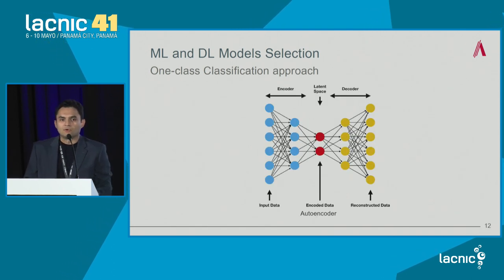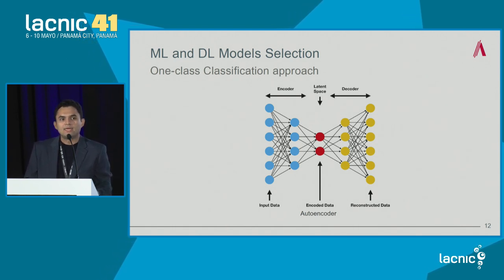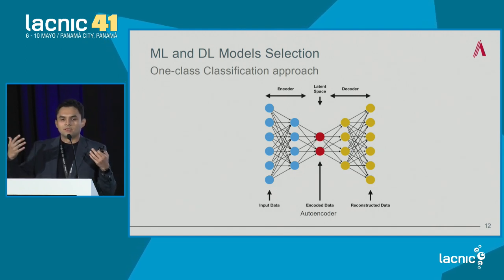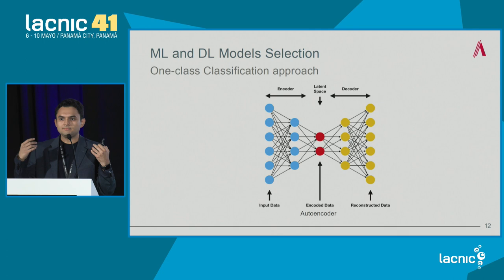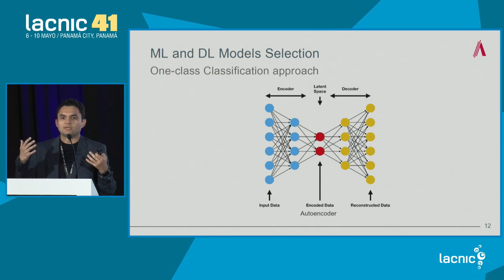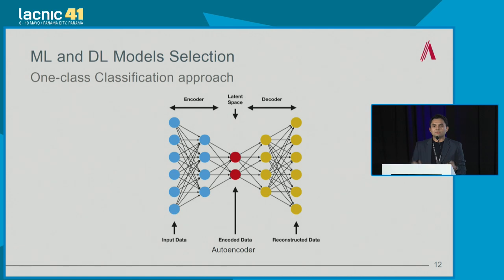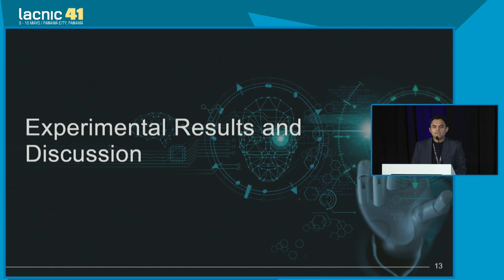For the deep learning part, we defined an autoencoder, which works like a compression algorithm. We pass normal traffic through it; when the algorithm tries to decompress traffic that is anomalous, there will be a larger reconstruction error because it doesn't recognize the pattern. This way we identify instances that do not belong to normal behavior.